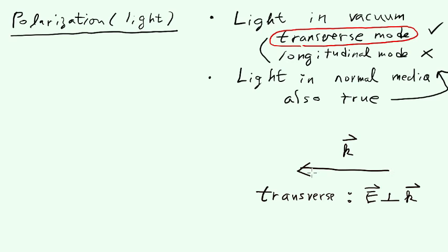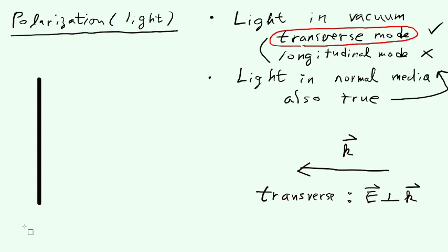If the electric field can exist along the direction of wave propagation, that's called longitudinal polarization, which we will not consider. So now that we have the definition of transverse light, let's discuss something elementary which will help our discussion on polarization. We will consider a small, thin rod.